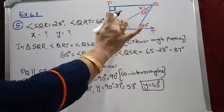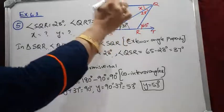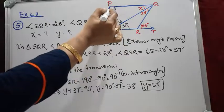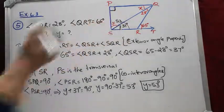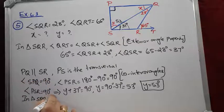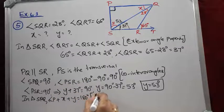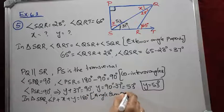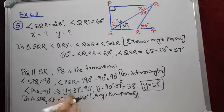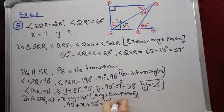Now consider triangle PSQ. In this triangle, angle P, X, and Y together form the three angles of the triangle, so their sum equals 180 degrees. By the angle sum property: angle P + X + Y = 180 degrees. Substituting the values, angle P is 90 degrees, so 90 + X + 53 = 180 degrees.